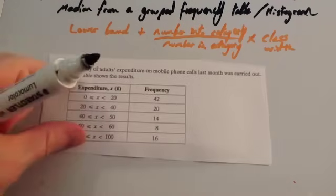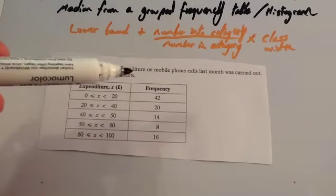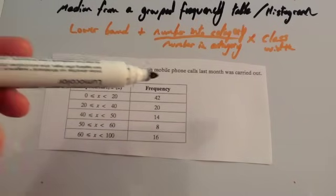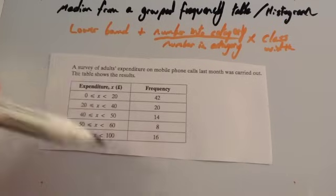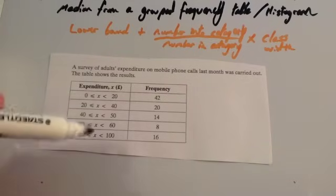So let's look at a typical question. Here you've got a table with a survey of adults' expenditure on mobile phone calls last month. You've got expenditure and frequency and we've been asked to find the median. The first thing you need to do is, by the way, this is an estimated median, just like estimated mean because you don't know exactly what the numbers are. So we're going to work out an estimate of the median.